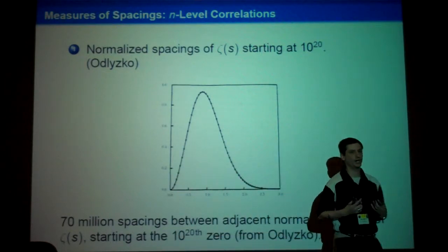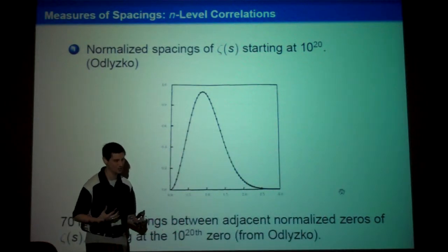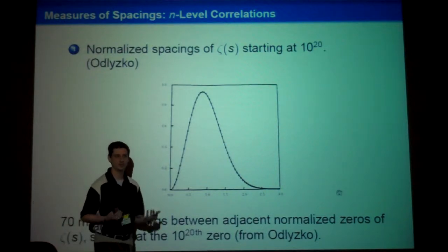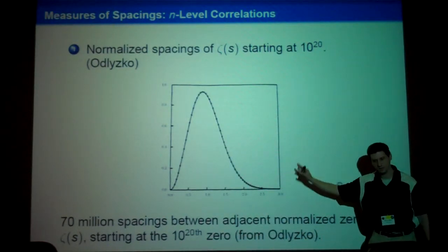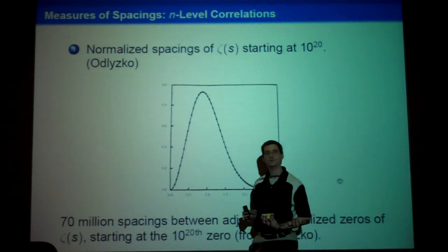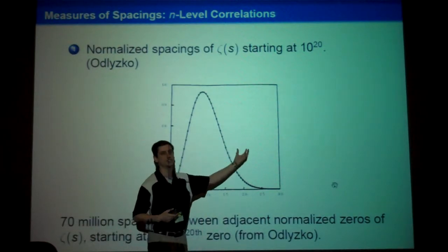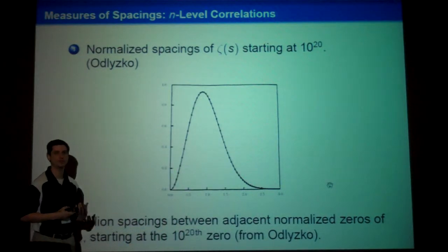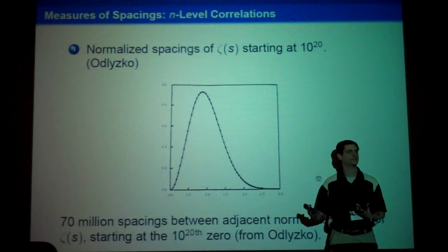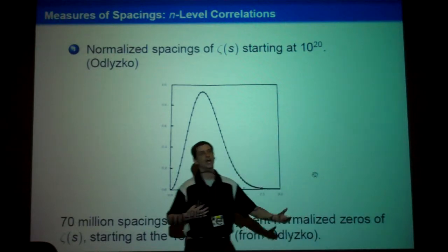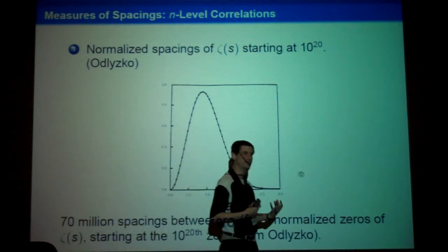What Odlyzko noticed was phenomenal agreement between the spacings of the zeros of the Riemann zeta function and what you get when you look at large unitary matrices. This was building on early observations of Montgomery and Dyson. Montgomery went to the Institute for Advanced Study and was talking to the great Freeman Dyson, who asked what he was working on. Montgomery said he was looking at the pair correlation of the Riemann zeta zeros and described what he was seeing. Dyson said: this is exactly what we see in random matrix theory. And so began the dialogue between physicists and mathematicians.